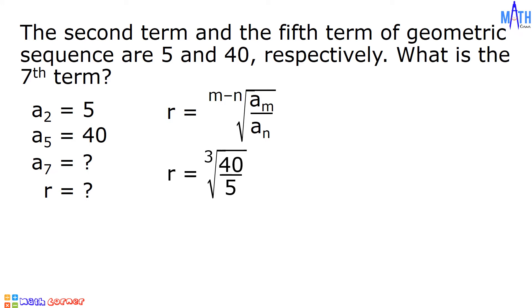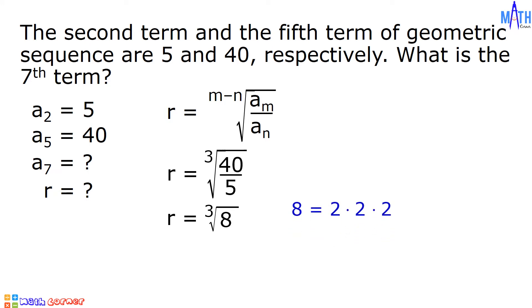Since 40 divided by 5 is equal to 8, we have the cube root of 8. Since 8 equals 2 times 2 times 2, the common ratio is equal to 2.